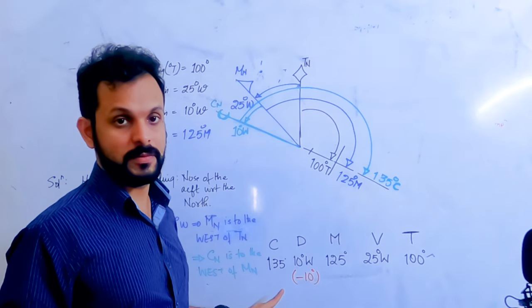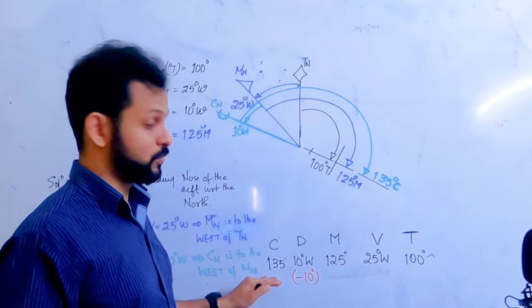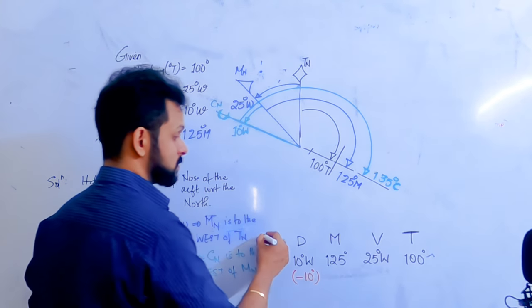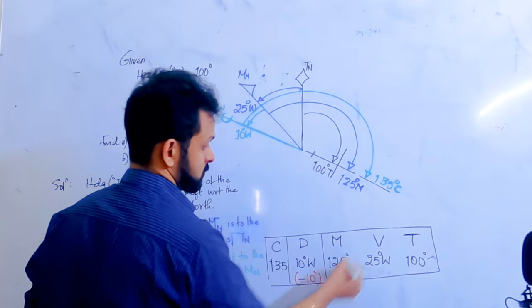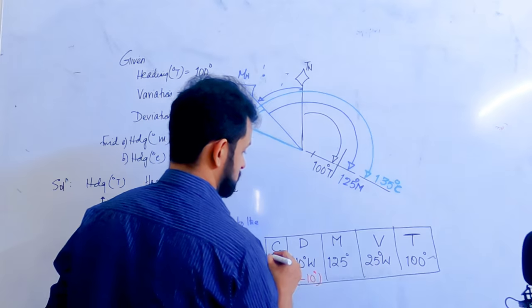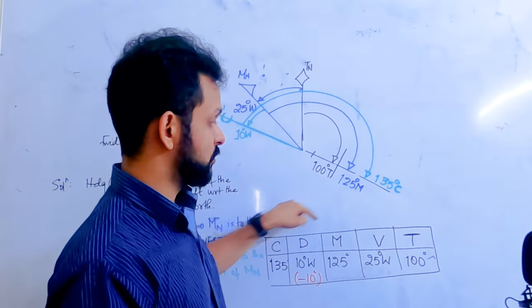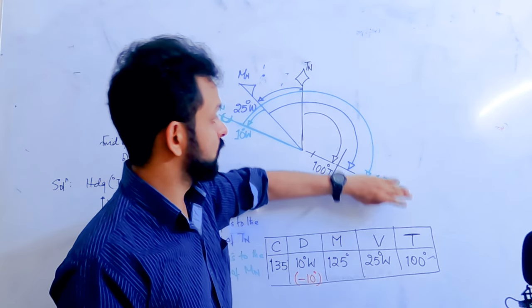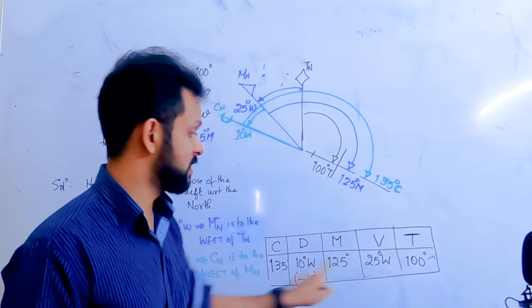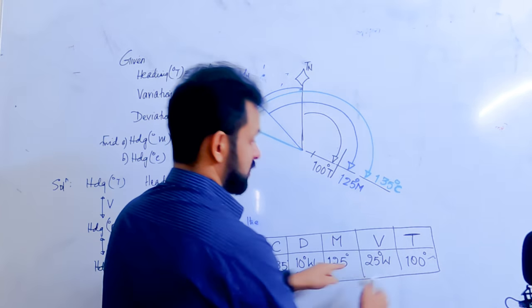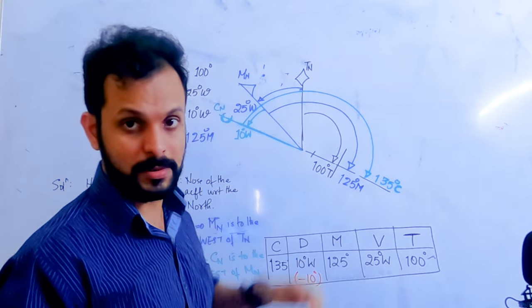For exams, the recommended quick technique is to make a table in the order CDMVT — Compass Heading, Deviation, Magnetic Heading, Variation, True Heading. Fill in what is given, then by applying the west-add/east-subtract rule you can get the answer in about 10 seconds. But we covered the diagram method first so you understand what's actually happening.